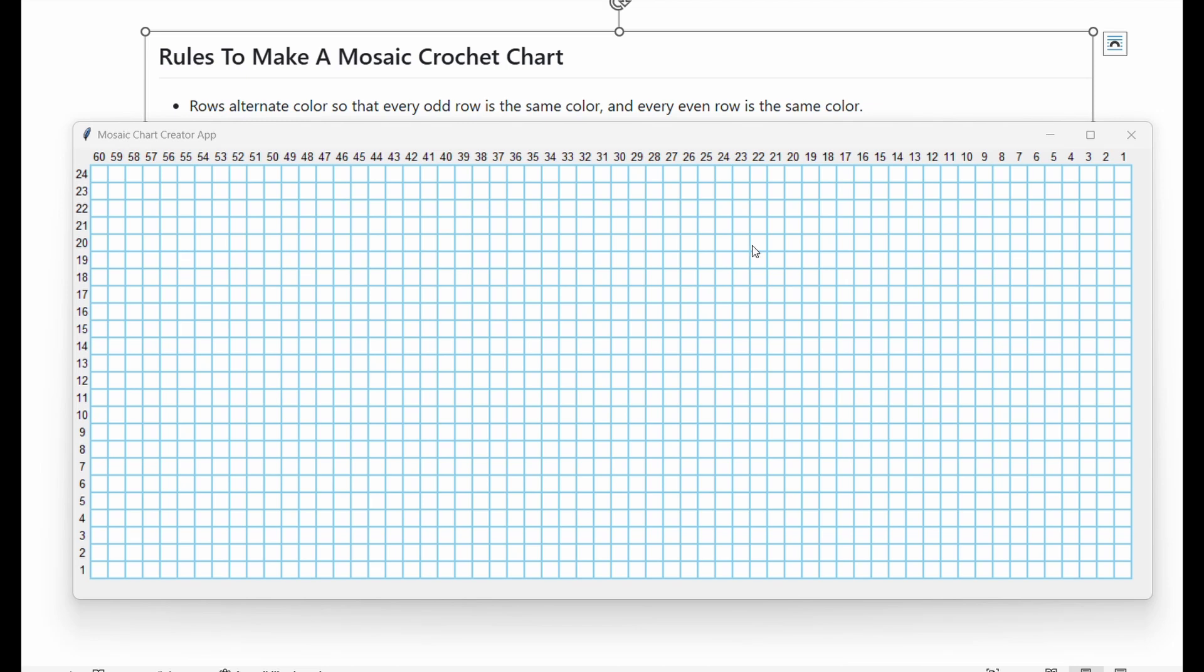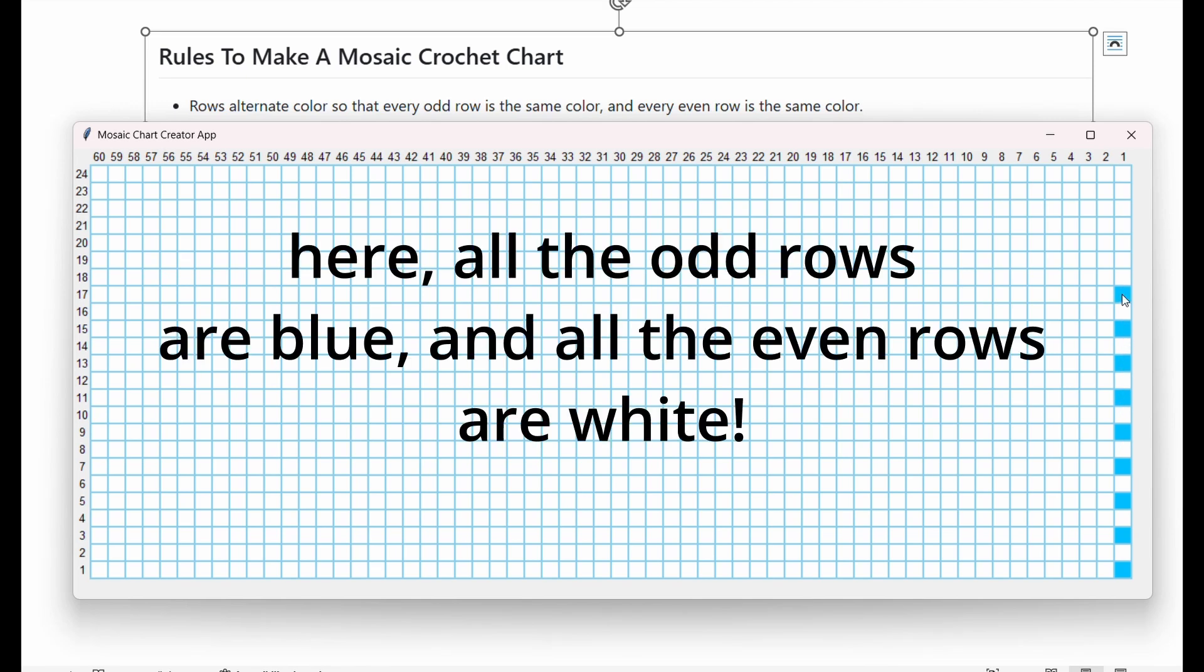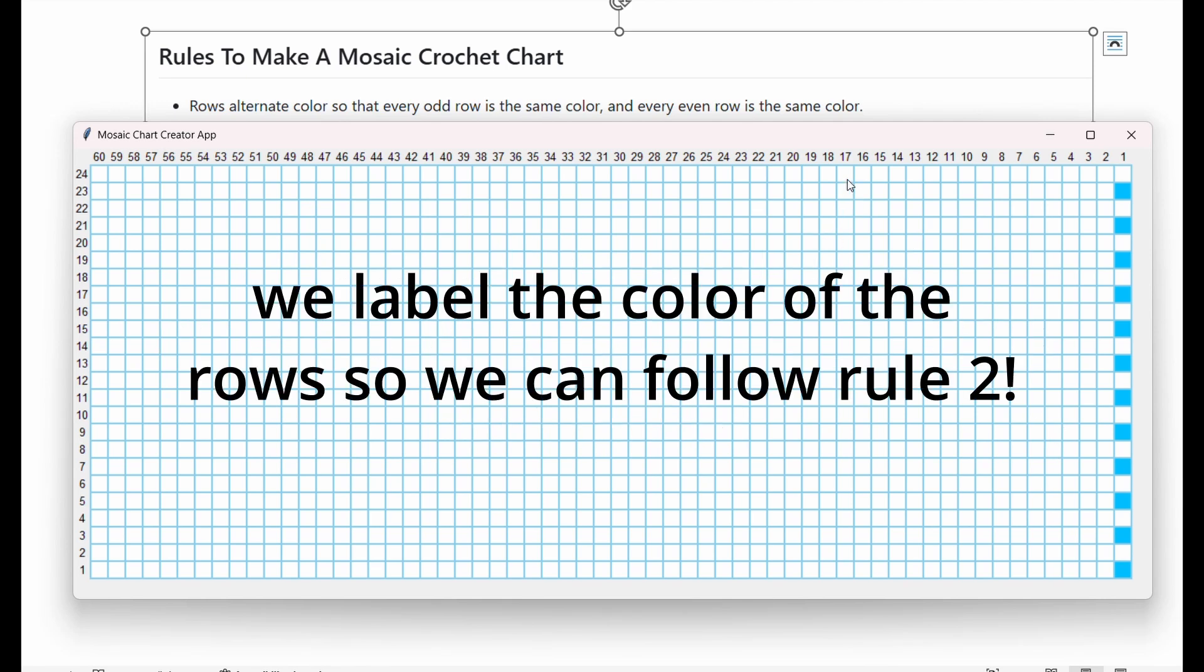Now I'm going to go through the rules to make a mosaic crochet chart. I have a YouTube video where I tried doing this on graph paper, but you know, it's poor quality. So this is to try to make up for that. We're going to start with rule one. Rows alternate color so that every odd row is the same color and every even row is the same color. So that just means this. It's good to mark on the side what color your row is just to avoid confusion.